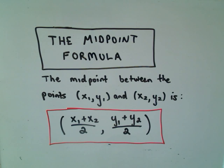And all the midpoint formula says, it says that the midpoint between two points, x sub 1 comma y sub 1, and x sub 2 comma y sub 2, it says all you do is add the x coordinates, divide by 2, add the y coordinates, and also divide by 2.